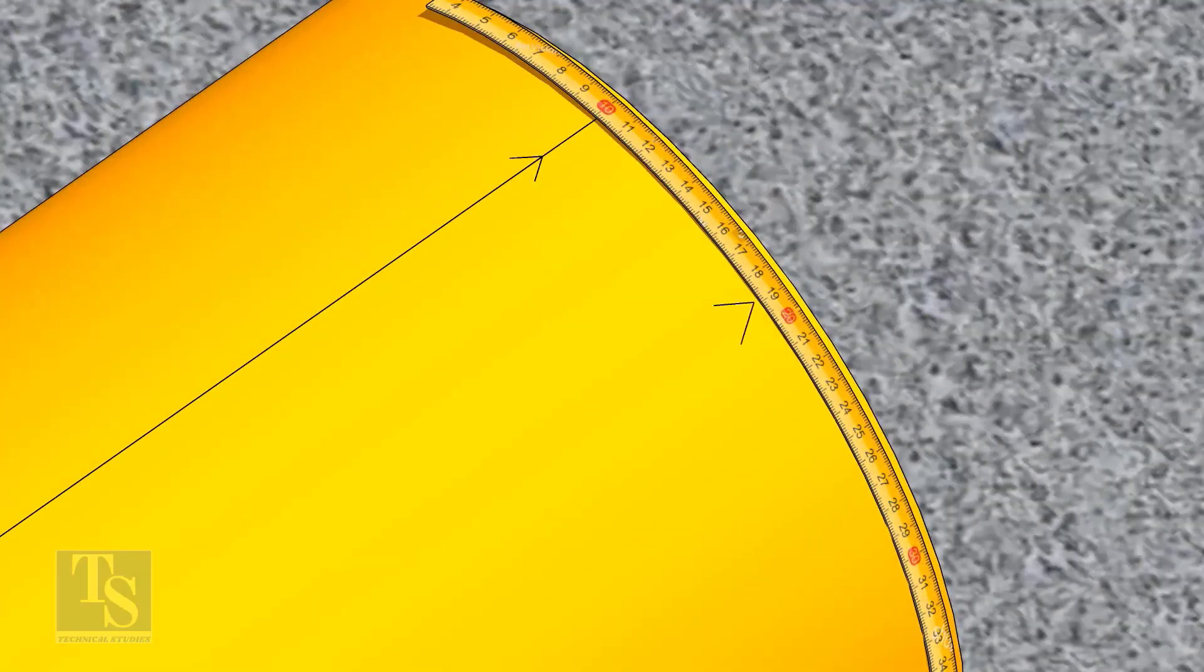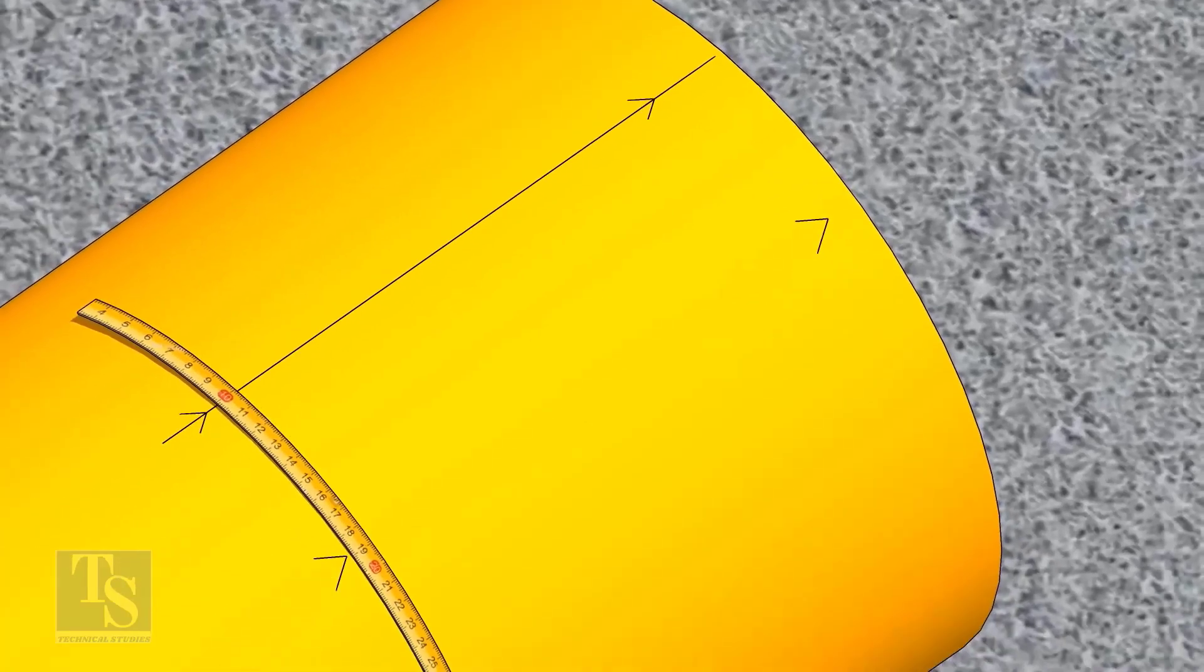Since we are rotating the flange 25 degrees anticlockwise, mark 88.5mm anticlockwise on the pipe as shown.